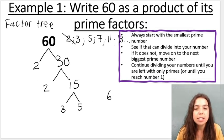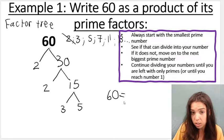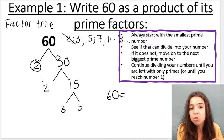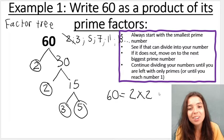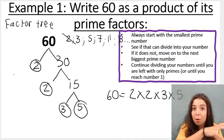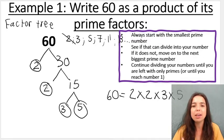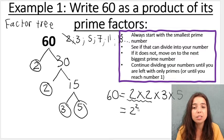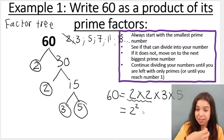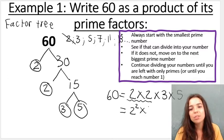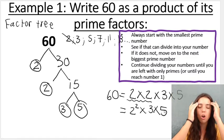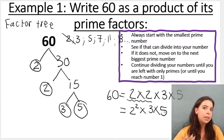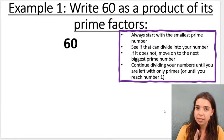So, how to write 60 as a product of its prime factors? We go: 60 equals, then we look at our tree, two times two times three times five. We take all the prime factors and multiply them by one another. Another way to write this: two to the power of two times three times five, because two to the power of two is two multiplied by itself twice. I will do a separate video on exponents and powers, because I know when you're in maybe grade six, seven, eight you may be unsure of that.